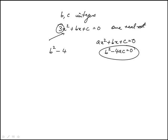If I apply that here, b² - 4, a is 3, c remains that, and so the condition is b² - 12c = 0.